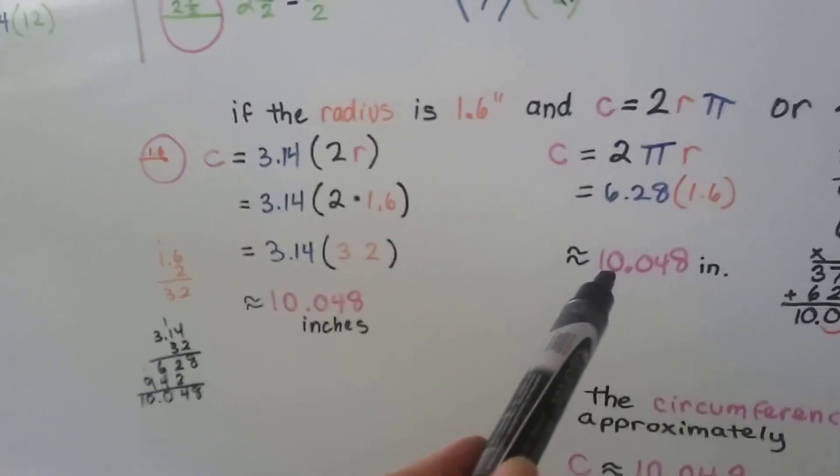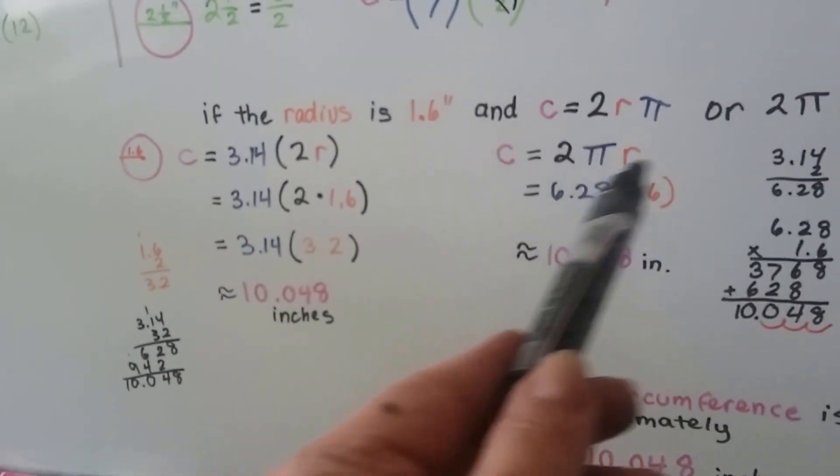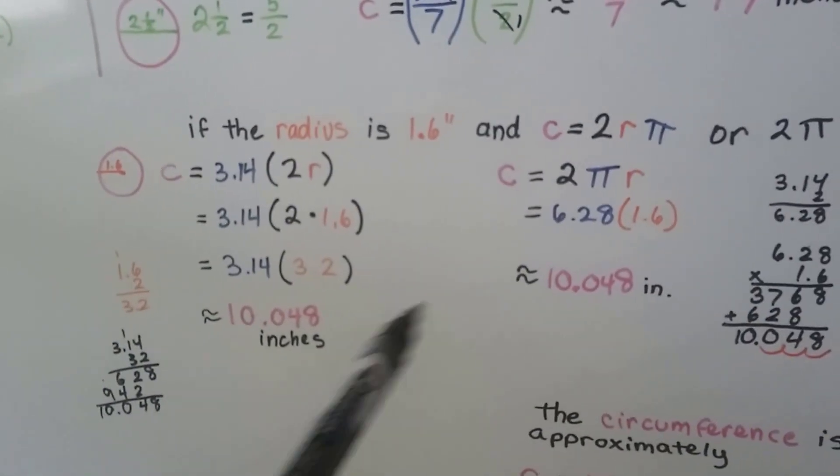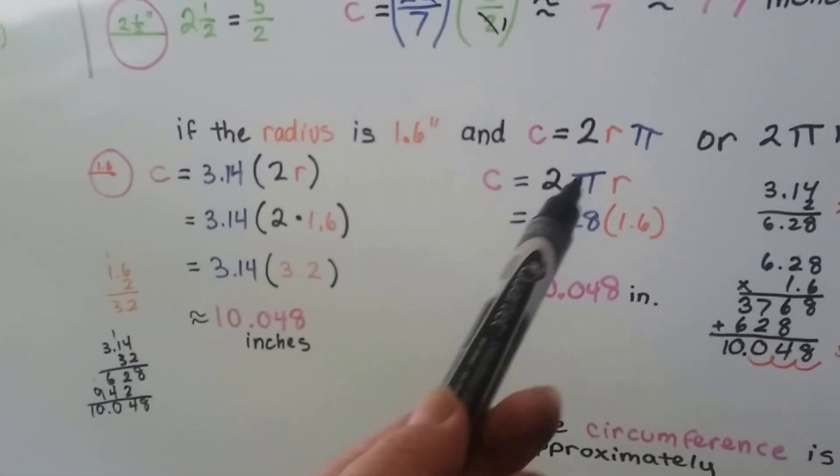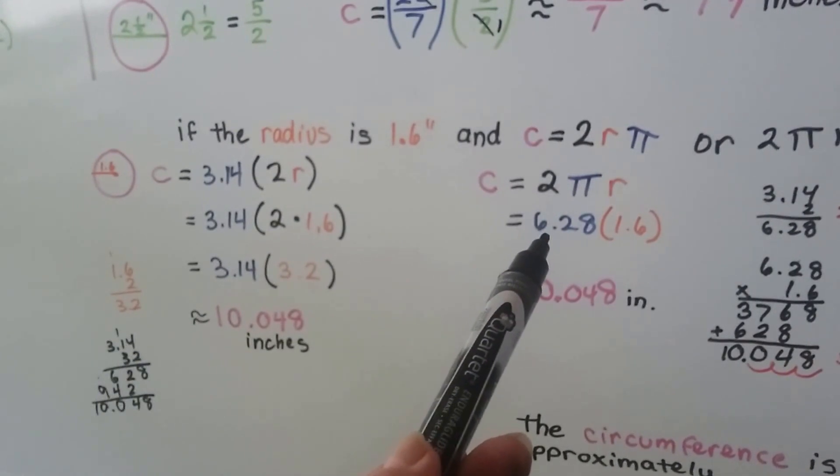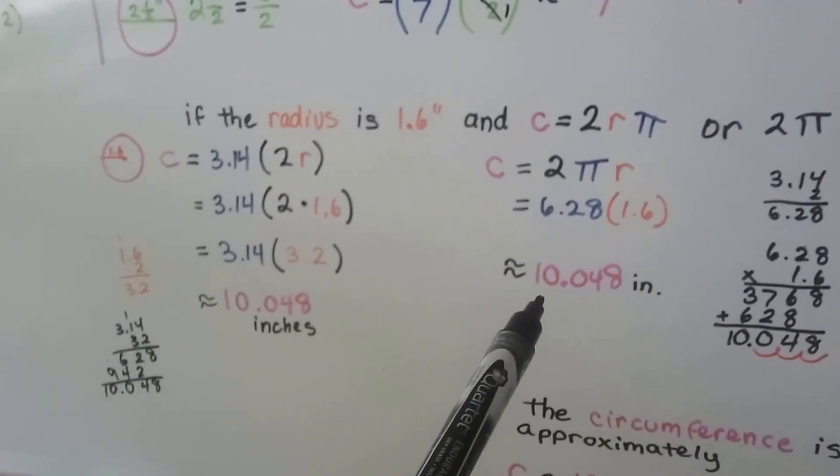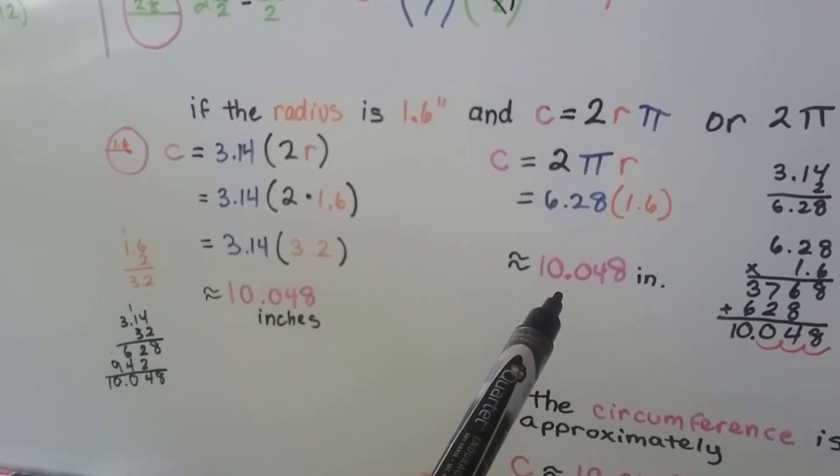If we did it the other way around, where it was 2 pi r and just rearranged these, because remember, multiplication is the same if it's all multiplication. Then we would get 2 times pi, which is that 6.28 that I hope you memorize, times the 1.6 radius. We're still going to get 10.048 inches.